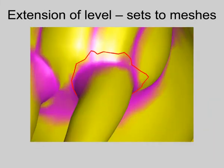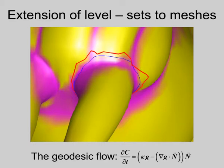To improve upon a given segmentation, we attract the curves towards the perceptual part boundaries using the geodesic flow, which also smooths the curves during the process. As the curves can cut through the mesh edges, the result is a smoother, better defined segmentation.